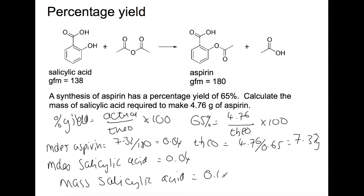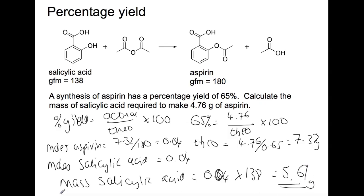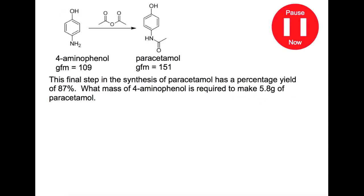We need the mass of salicylic acid to be weighed out. Taking the moles of 0.04 and multiplying by the gram formula mass from the question, you would need to weigh out 5.61 grams of salicylic acid to produce 4.76 grams of aspirin. Pause the video now and try this similar question.